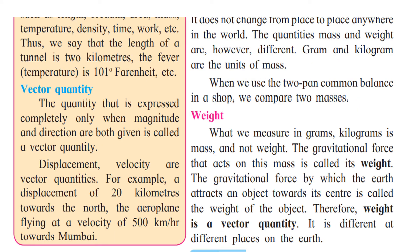What we measure in grams and kilograms is mass and not weight. Normally we say 'weight of rice is one kilo' or 'weight of a person is 50 kilos,' but that is actually the mass. The gravitational force that acts on this mass is called its weight. The gravitational force by which the earth attracts an object towards its center is called the weight of the object.